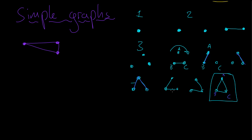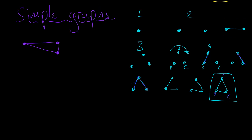We can also have graphs where every node is connected to every other node by precisely one arc. In this three-node example, each node is connected to the other two nodes by precisely one arc each — and this is also a complete graph. Every node is connected to every other node with only one arc between them. We call those types of graphs complete graphs.